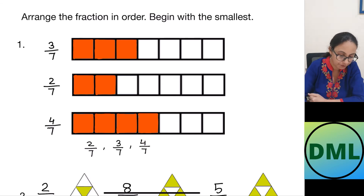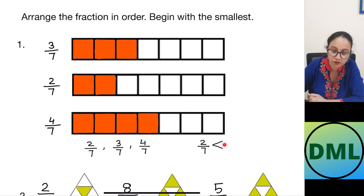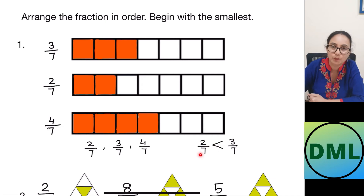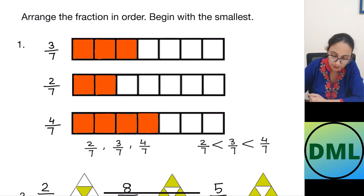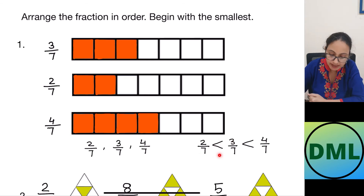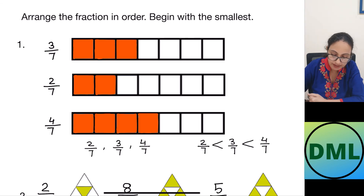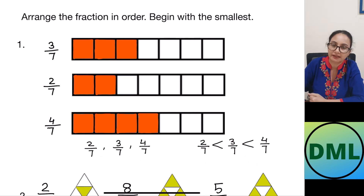This may also be written in a different form. 2 by 7 is the smallest — this point shows the smaller number and the open mouth shows the bigger number. So 2 by 7 is smaller than 3 by 7, and 3 by 7 is smaller than 4 by 7. So 4 by 7 is bigger than 3 by 7 and 3 by 7 is bigger than 2 by 7. This is the order starting from the smallest. There are two ways to write it down.